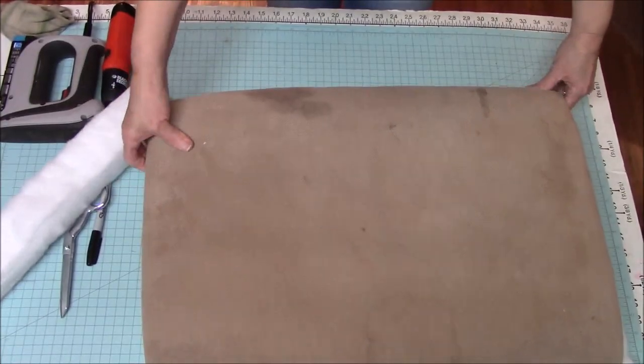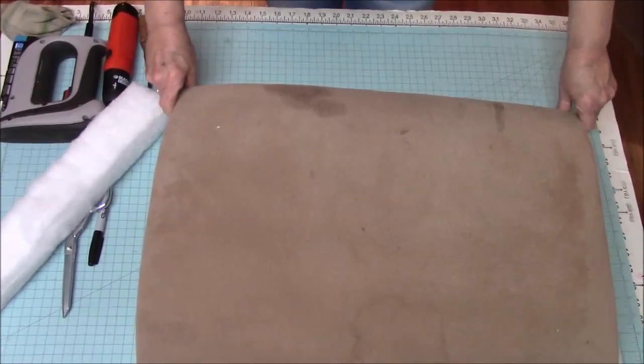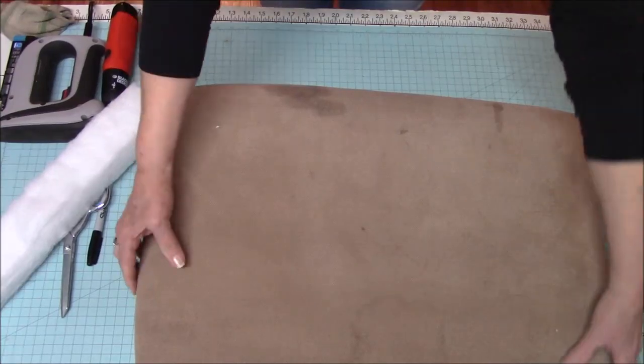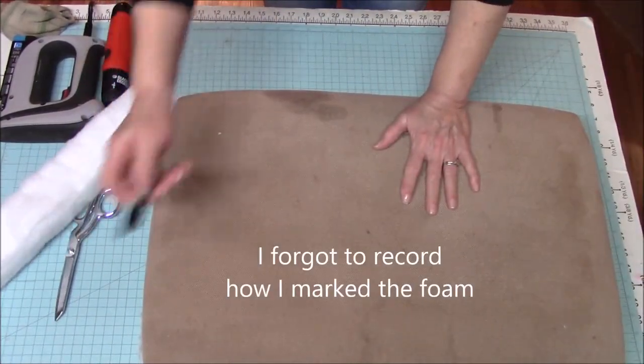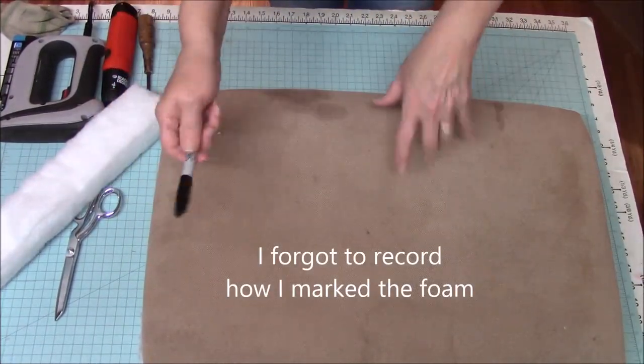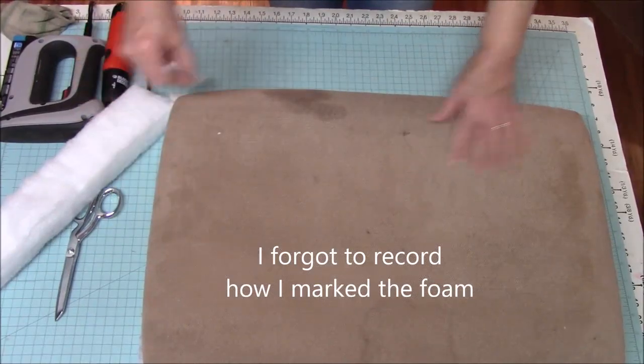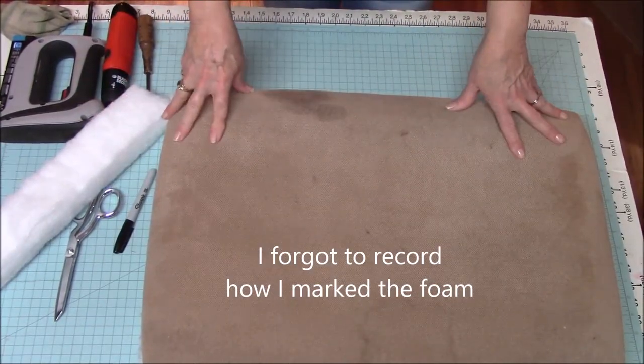What I did is I had my big piece of foam and I laid it out and I laid my seat on here and then went around it with a sharpie. Then I cut it with my scissors, but you could cut it with a knife. If you had a big strong exacto knife, you could do it with that too.